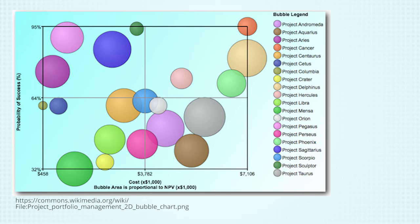Conversely, a small bubble in the lower right corner has a low net present value, a high cost, and a low probability of success. This would not be a good project to select. However, this chart does not take into account if those projects are mandatory. We would have to select a mandatory project regardless of the net present value, cost, or probability of success. This is just one view of the data. There are many different views that we can produce with these tools.